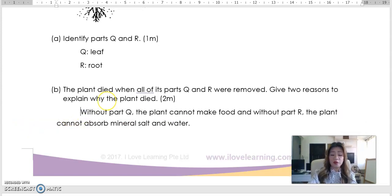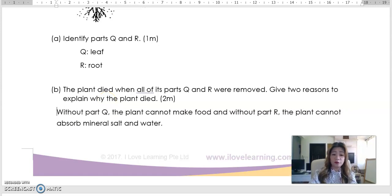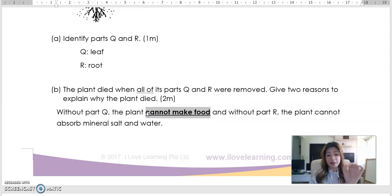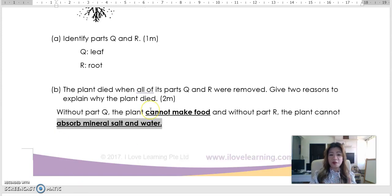So that the plant has water for its sustenance. So without Q, part Q, the plant cannot make food. So this is the keyword, cannot make food. This is what you learned in this topic. Making food leaves is meant to make food. Therefore, cannot make food becomes a keyword. And without part R, part R which is a root, the plant cannot absorb mineral salt and water. So this is another keyword that you learn. You know that roots are meant to absorb mineral salt and water. So this becomes a keyword in your answer. Without this two, you will not get your full marks of two marks. So remember, everything that you learn in science concept should appear in your answer. If it's not there, you will not get your marks. So concept, key concepts, very very important.